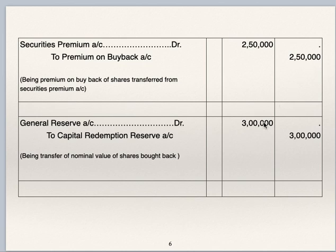General reserve account debit to capital redemption reserve account. Out of face value of shares bought back, which is 5 lakhs, only 3 lakhs is to be transferred to capital redemption reserve account, because company has issued 12% preference shares for the purpose of buyback, whose value is Rs 2 lakhs.